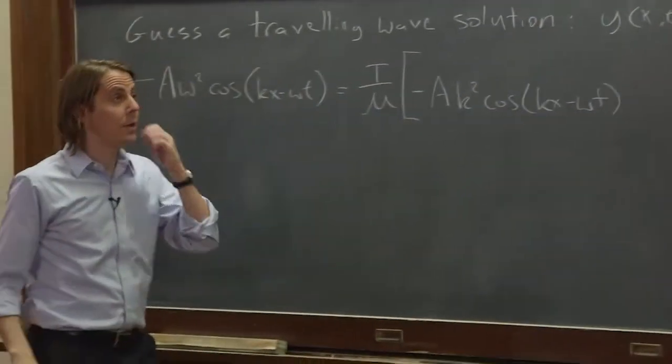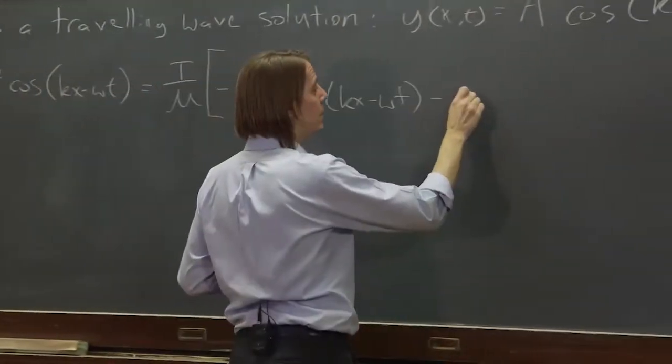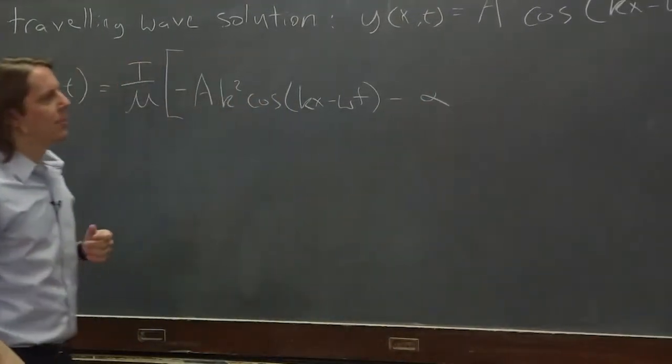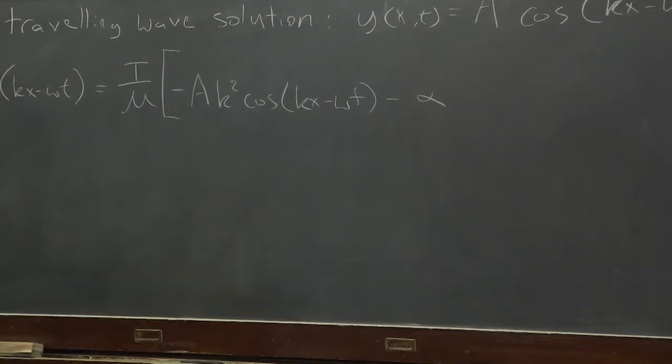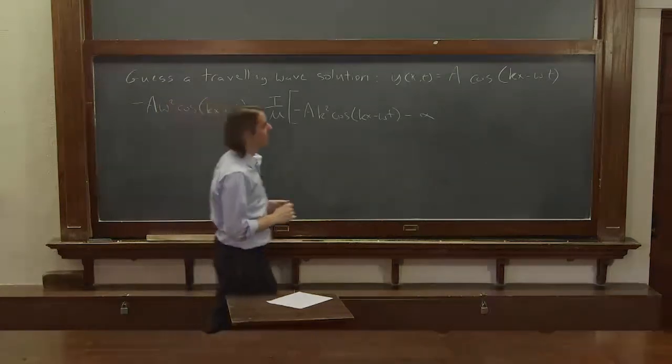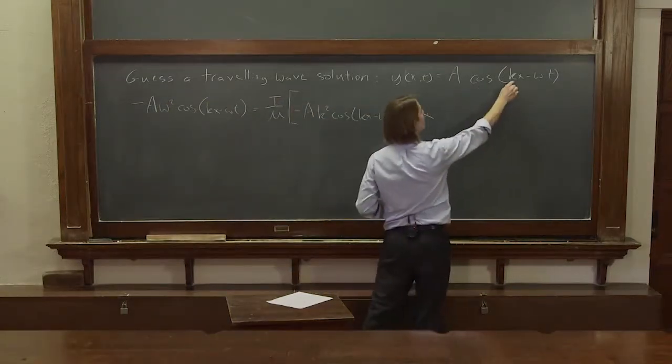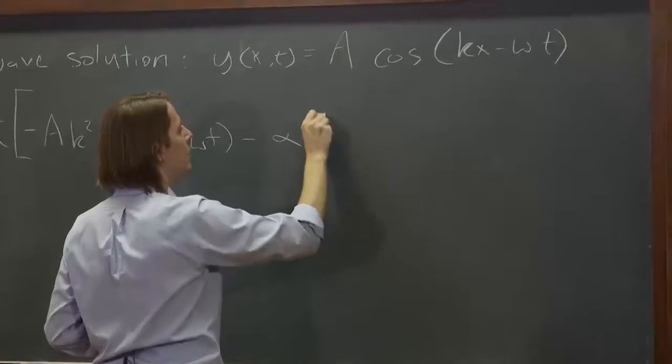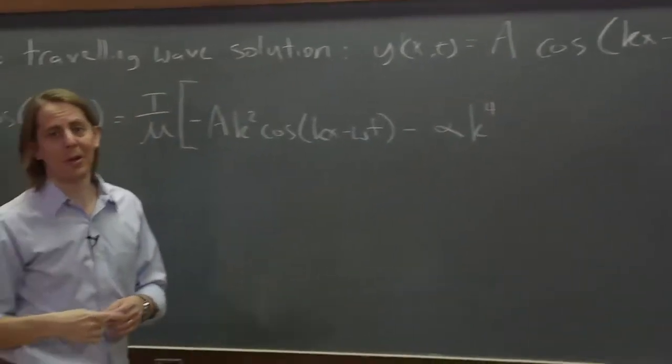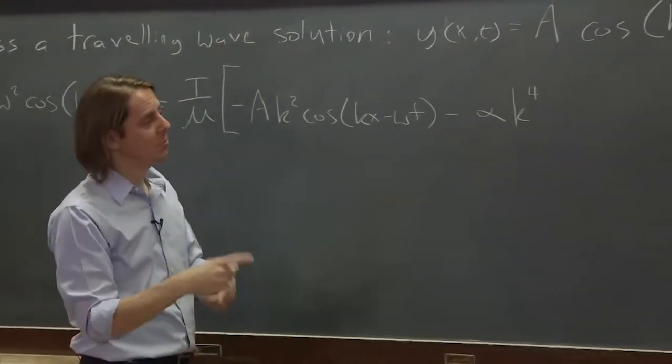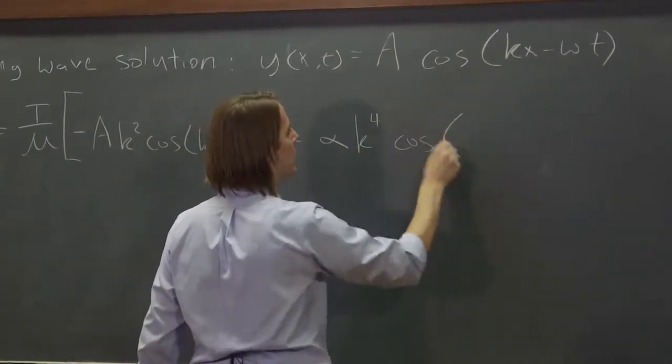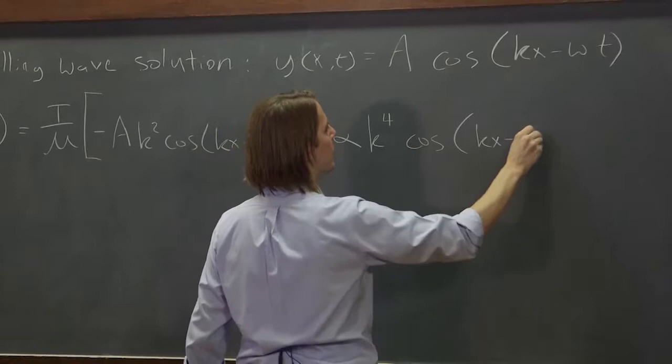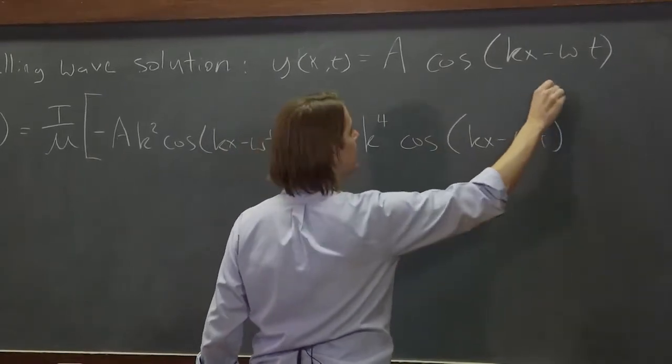And then we had minus alpha. Remember alpha was EI over T when we pulled everything out. Minus alpha and then d⁴y/dx⁴. So we're going to take four spatial derivatives, we're going to pull out four k's, it's going to go back to cosine without the minus. Take four derivatives, you won't have to pull a minus out, so that minus stays. Cosine kx minus omega t.